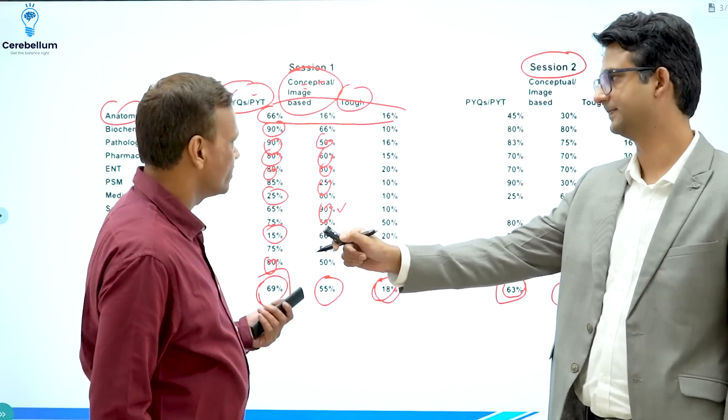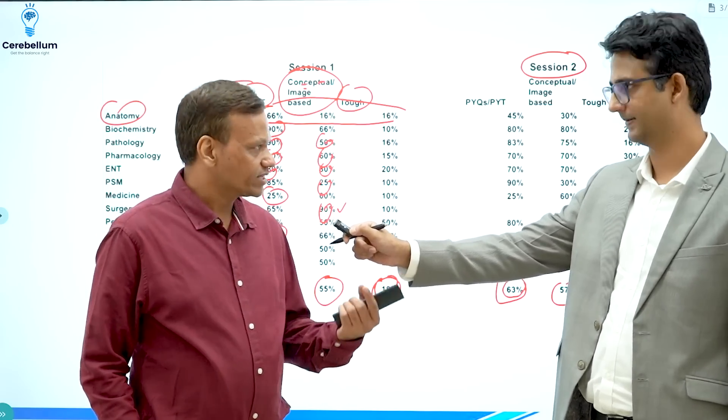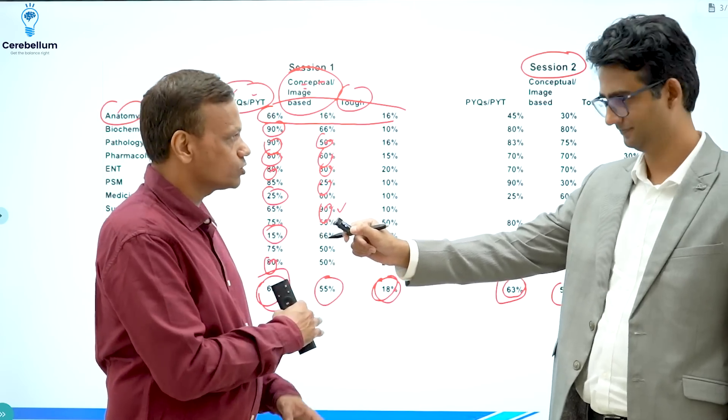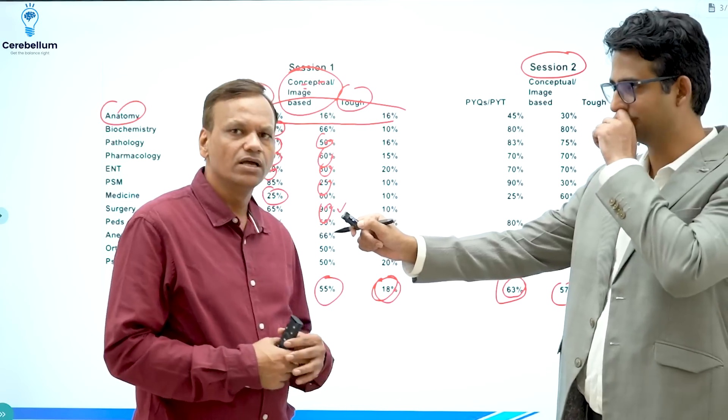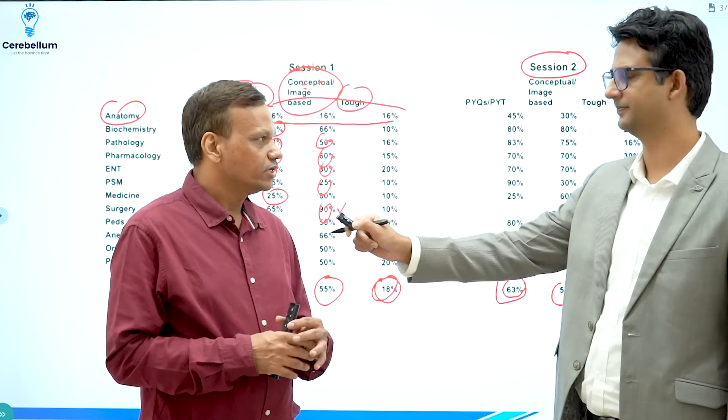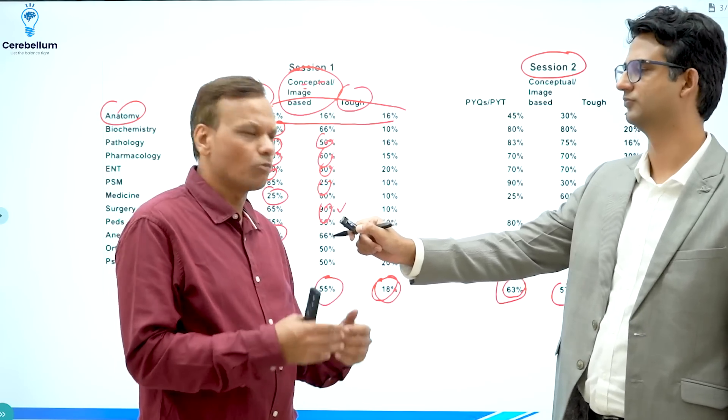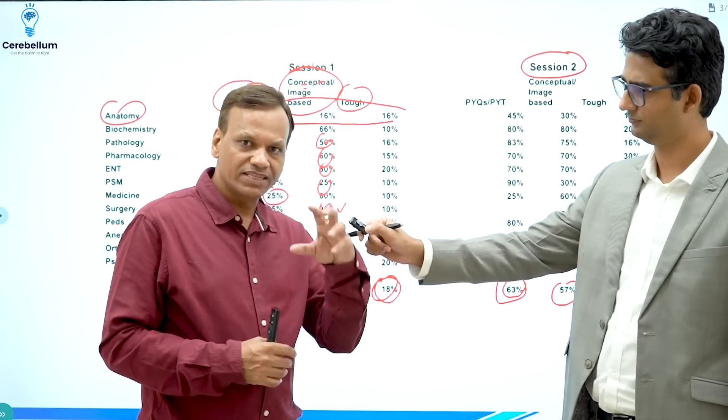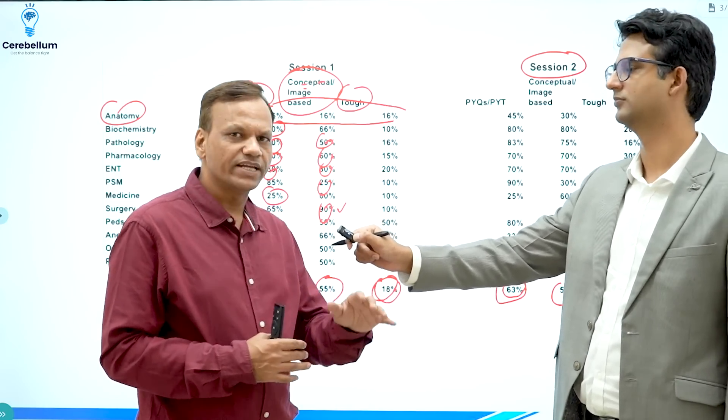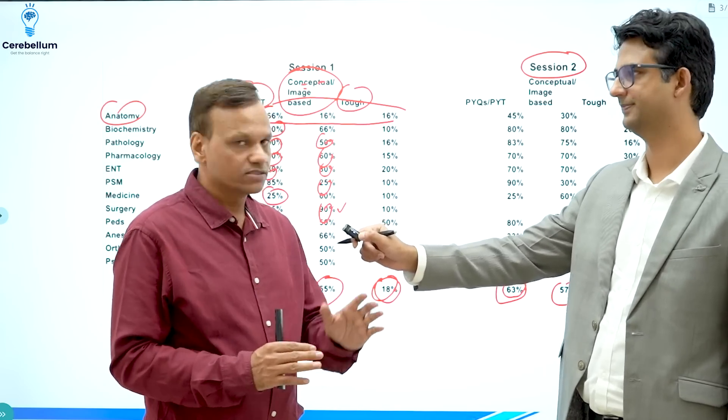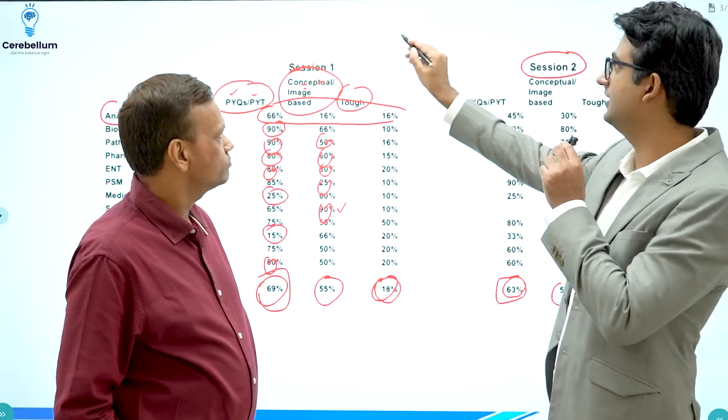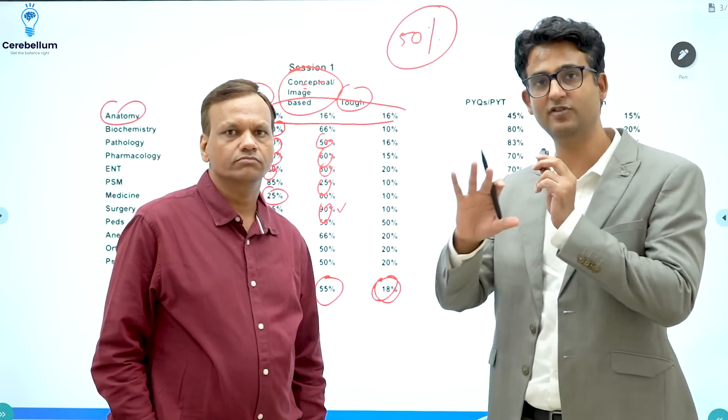So this is very obvious answer. PYQs and PYTs will never be irrelevant. So there are two important things I want to stress. Number one, I have been teaching since 20 years. And I have seen papers much tougher than this also. I have seen papers which have even lesser PYTs than this also. There was one exam I think in 2012, 11 or 12 something. The paper was extremely, extremely tough. Even I do not know many questions. And most of the teachers were not aware about the questions. But even that paper contained around 55% of the PYTs. So more than 50% PYTs have been asked in every exam till now. Since last 20 years that I am teaching.